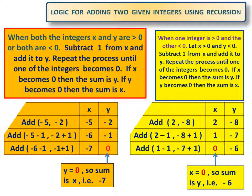When one integer is positive and the other negative, let x be positive and y be negative. Subtract 1 from x and add it to y. Repeat the process until one of the integers becomes 0. If x becomes 0, then the sum is y. If y becomes 0, then the sum is x.